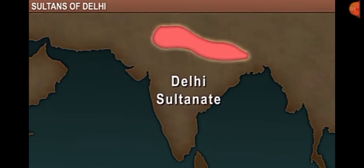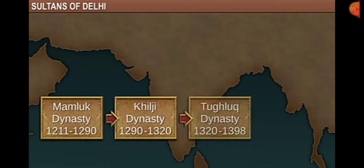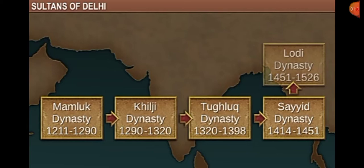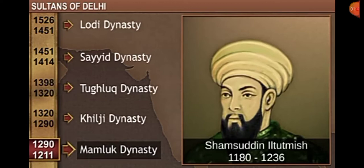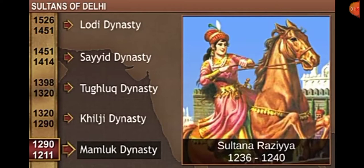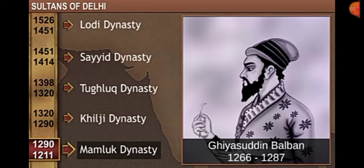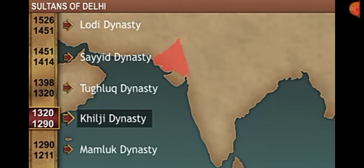The Delhi Sultans preferred the title of Sultan, and this period came to be known as the Delhi Sultanate. It started with the Mamluk dynasty, the early Turkish rulers, followed by the Khilji, Tughlaq, Sayyad, and Lodi dynasties. Qutubuddin Aibak's son-in-law, Shamsuddin Iltutmish, took over the throne of Delhi. Iltutmish passed on the rule to his daughter Razia Sultan, as she was more capable than his sons. She was the only woman ruler of the Delhi Sultanate.